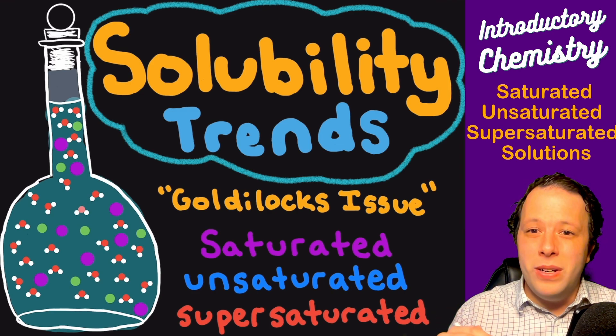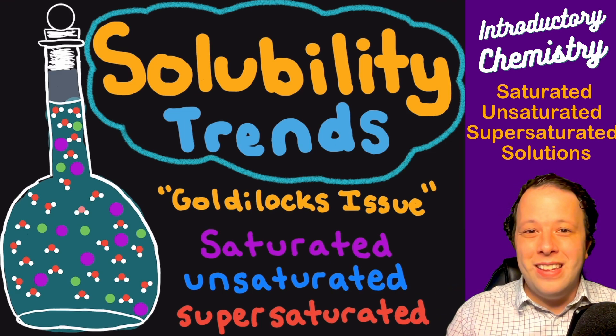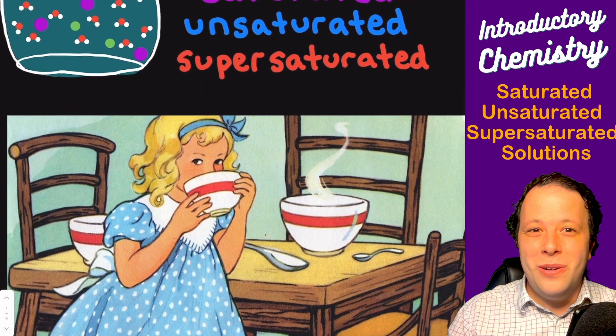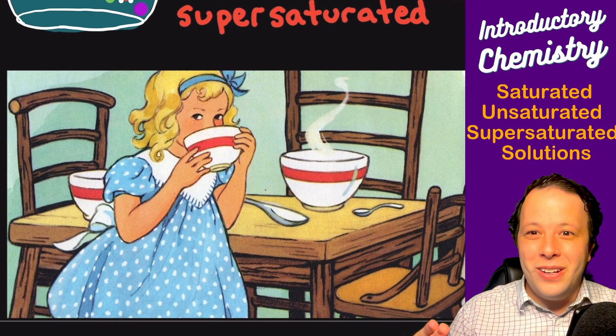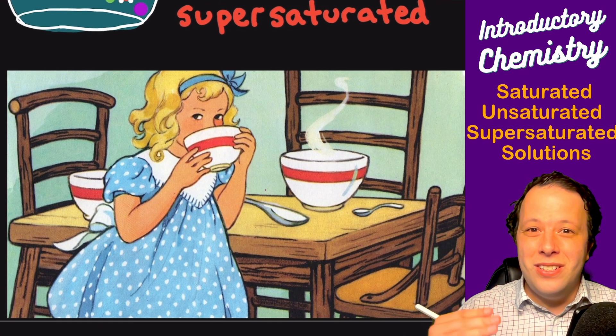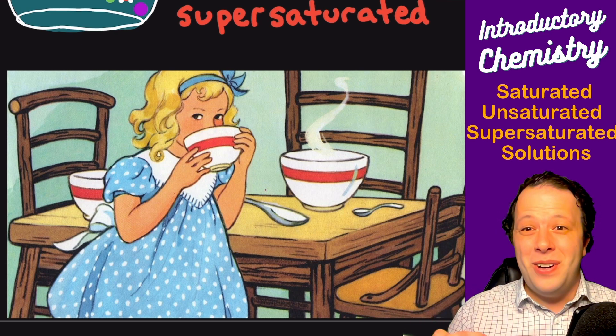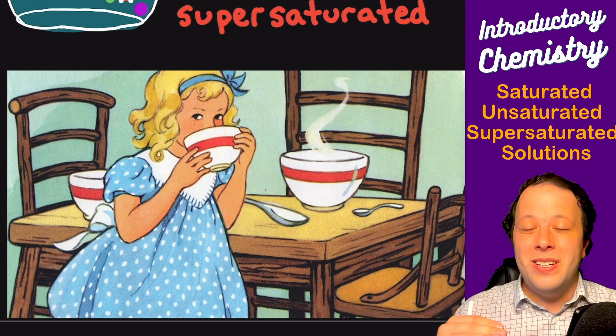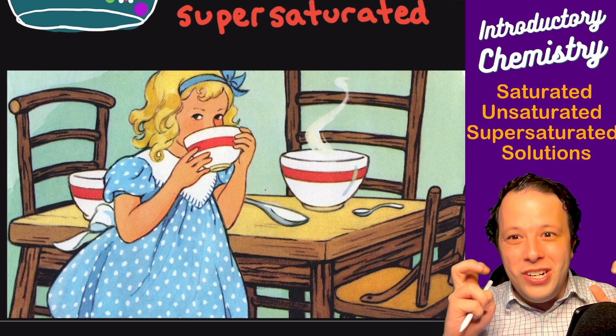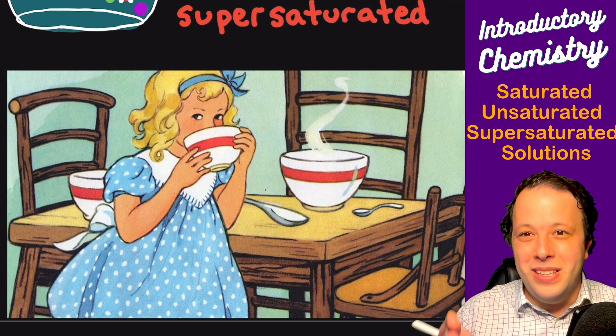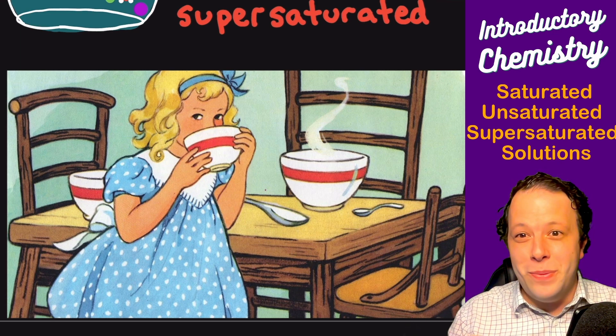This is what I'd like to describe as the Goldilocks issue when it comes to solutions. It's very similar to that old nursery rhyme about Goldilocks and the three bears where she was trying the different types of porridge that was too hot, too cold, and just right. It's very similar here where we have too concentrated, not concentrated enough, and just right, and how that affects the chemistry behind them.